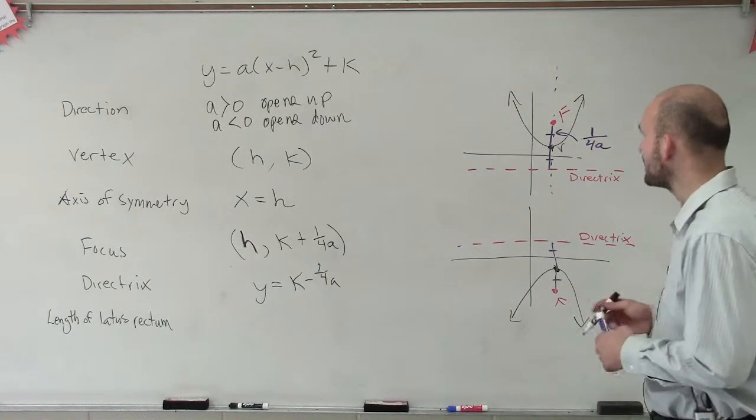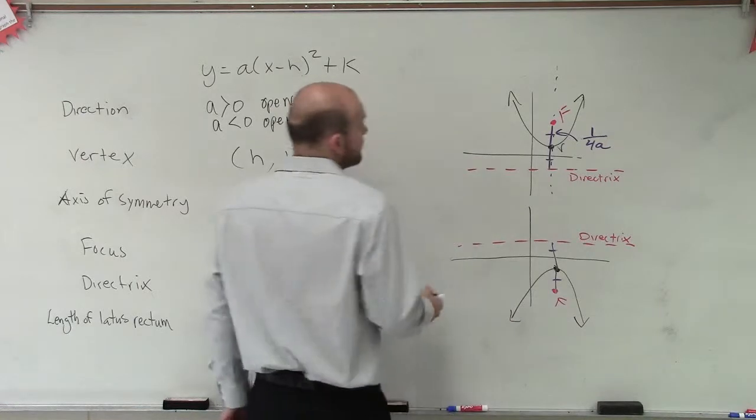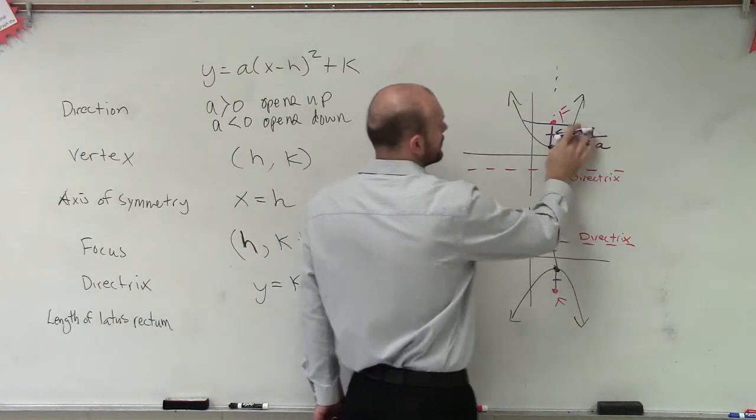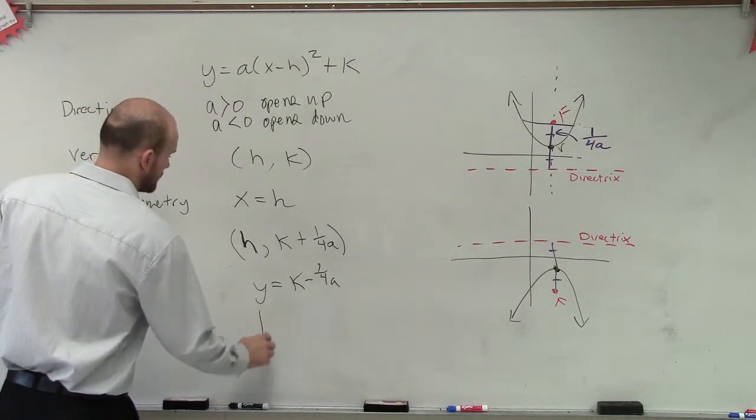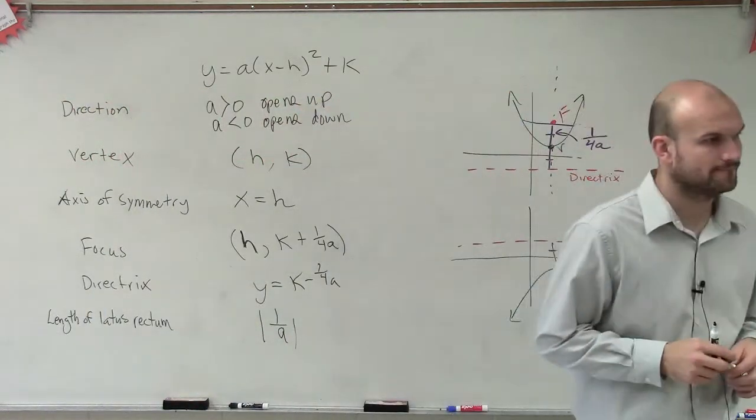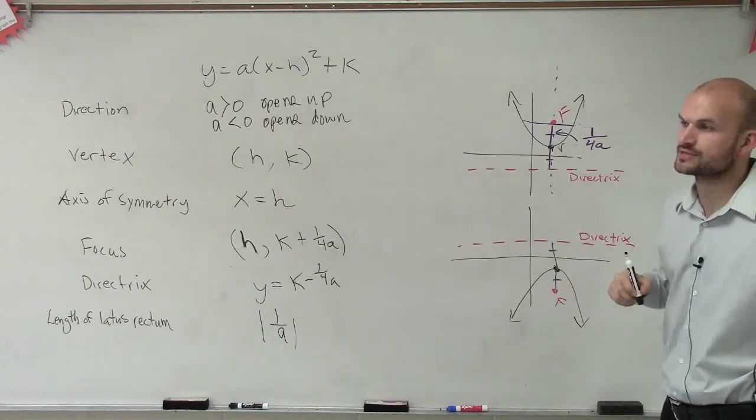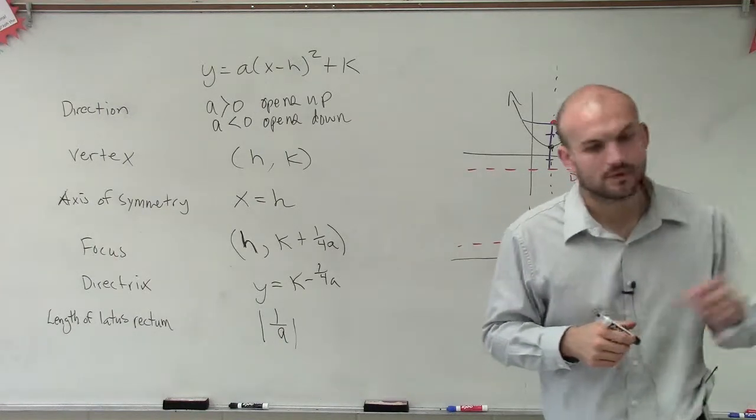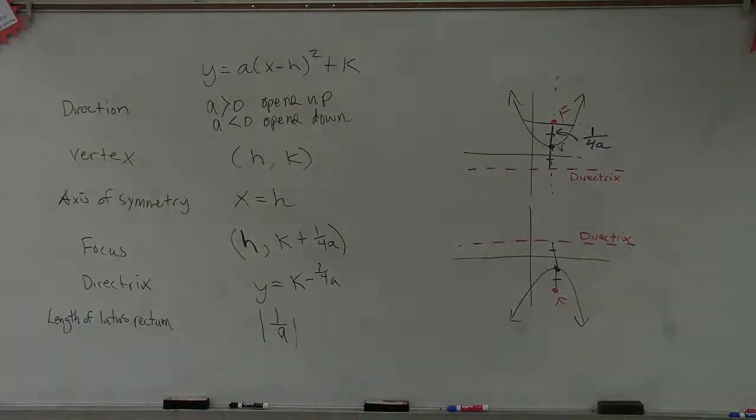And then the last one, which we haven't gone through, which we have our latus rectum. The latus rectum states that if you have a perpendicular line to your axis of symmetry, that goes through the focus, it's going to be the absolute value of 1 over a. Yeah, it's perpendicular axis of symmetry and it goes through the focus. Absolute value of 1 over a. You got that? Okay. So, that's it for that. Took me nine minutes to go through this. I'll go through the other.